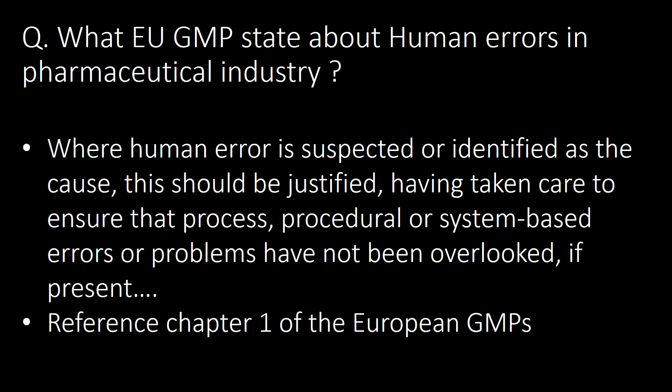What does EU GMP state about human errors in the pharmaceutical industry? Where human error is suspected or identified as a cause, this should be justified, having taken care to ensure that process, procedural, or system-based errors or problems have not been overlooked if present. Reference: Chapter 1 of the European GMPs.